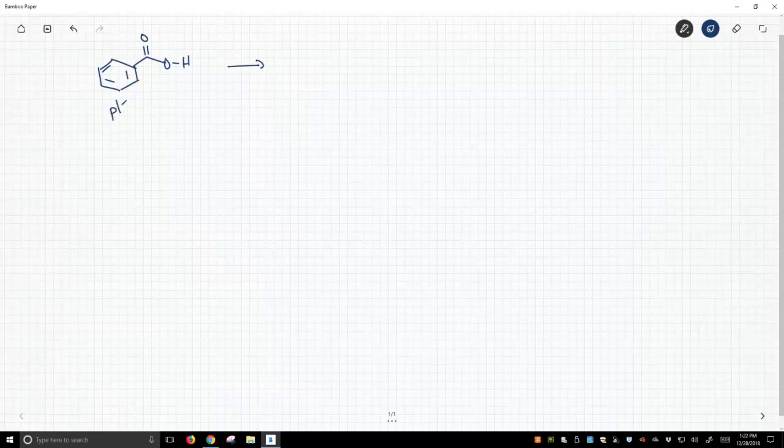Benzoic acid has a pKa of about 4.2 and it forms a conjugate base that looks like this.